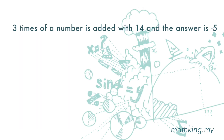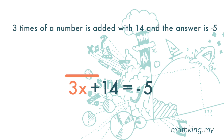Three times a number is added with 14 and the answer is negative 5. We do not know this number, so it is a variable. Let's take x to represent the number. Three times a number is 3x. Added with 14 gives plus 14, and the answer is negative 5. So the equation is: 3x plus 14 is equal to negative 5.